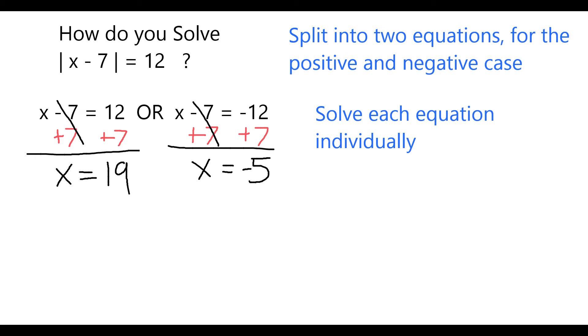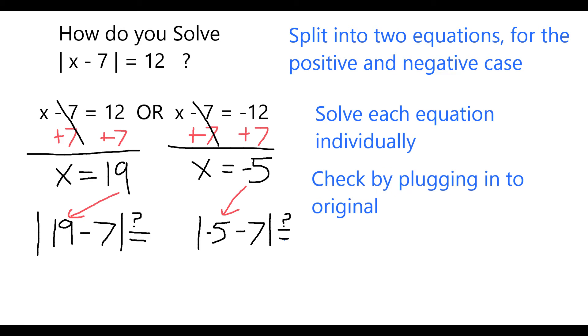Now let's verify both of these solutions work. If I plug in 19 for x, I get 19 minus 7, and of course that's equal to 12. The absolute value of 12 is simply 12, so in that case it is true.